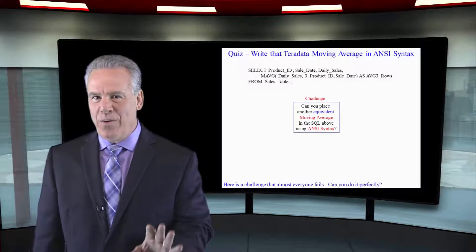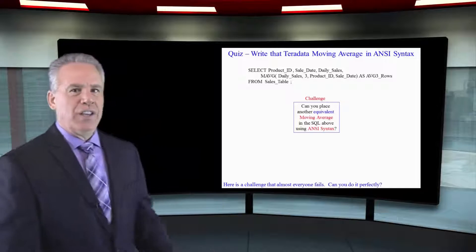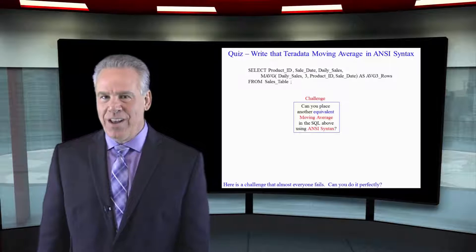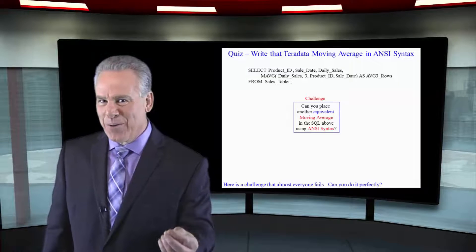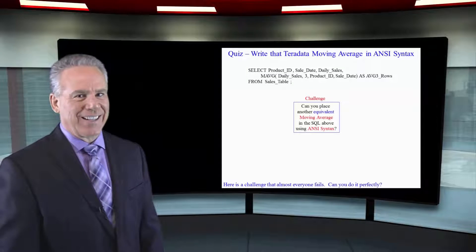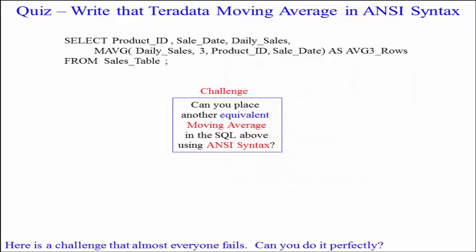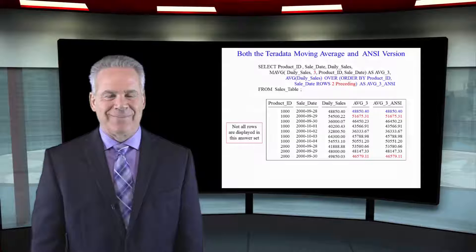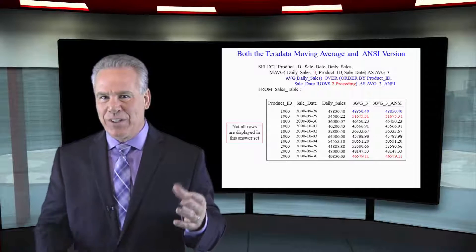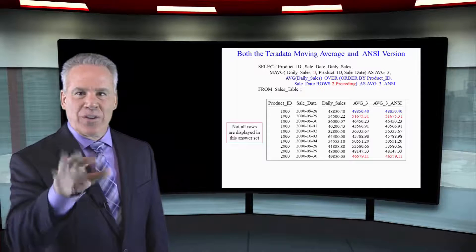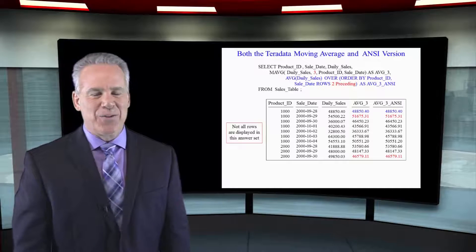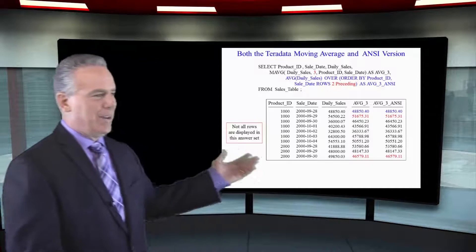I've made this easier for you. I want you to show me the equivalent ANSI version of the moving sum every three rows after you sort by product ID and sale date. I've got the previous moving average we saw and we wanted to convert, still in this query, and I've got the ANSI version right next to it in blue now.